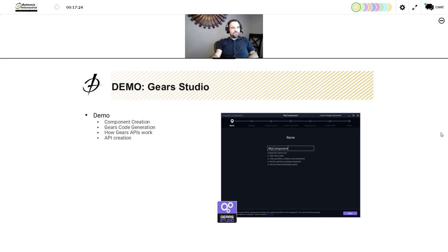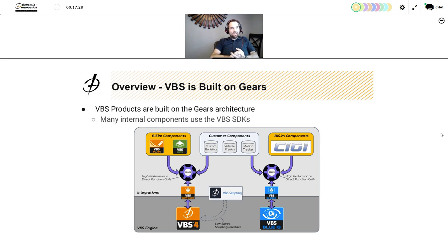To reiterate — VBS products are built on the gears infrastructure. Many of the internal components you interact with in VBS4 and Blue IG are actually built using our own SDKs. For example, VBS Plan and VBS Geo are built on technology from the VBS Simulation SDK, and the CIGI implementation on VBS Blue IG is built on the VBS IG SDK. Customer components can plug into those same interfaces using high speed direct function calls through the gears interface, as opposed to the VBS scripting interface, which is a low speed interface based on string and script parsing.